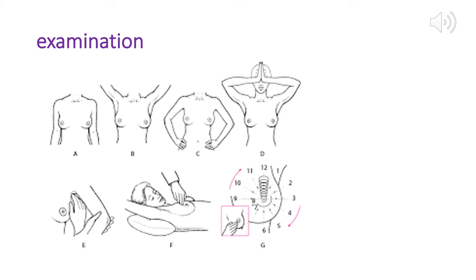Positions A through D are for inspection. Position A is arm beside the body, B is arm above the head, and C and D are for contracting the pectoralis muscle. Then ask the patient to lie down and start from the nipple by palpating in a circular motion, making sure to cover all important areas.